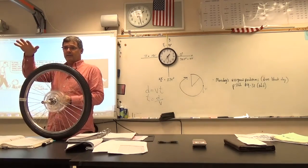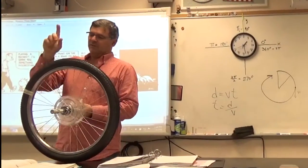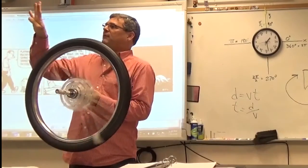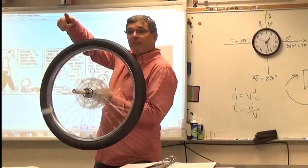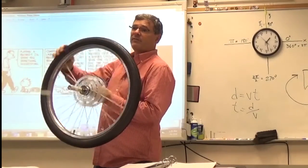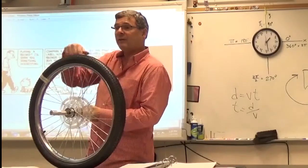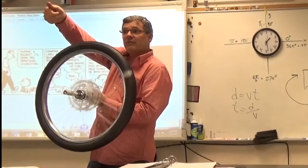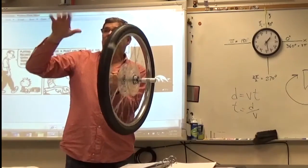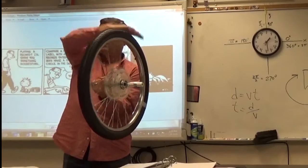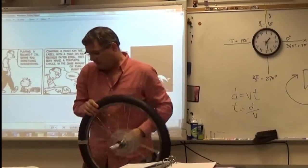The right-hand rule: take the fingers of your right hand, curl them in the direction that the wheel is spinning, and the direction your thumb points describes the direction of the spin. Right now all of our thumbs are pointing to the back of the room — it doesn't matter which side of the wheel you're on, we all agree on the direction. If I spun it the other way, everyone's thumb would point to the ceiling.